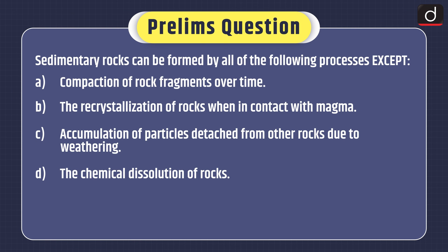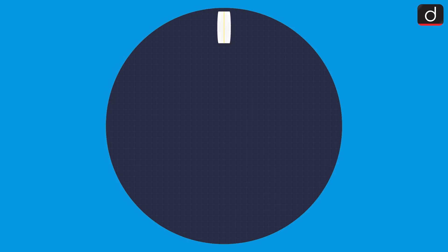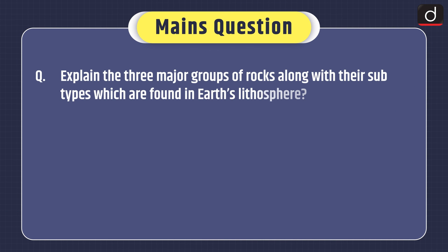Now it's time for practice questions. Prelims-based question: Sedimentary rocks can be formed by all of the following processes except — compaction of rock fragments over time, recrystallization of rocks when in contact with magma, accumulation of particles detached from other rocks due to weathering, or chemical dissolution of rocks. Mains question: Explain the three major groups of rocks along with their subtypes found in Earth's lithosphere. That's all for today. Stay tuned for the next episode. Thanks for watching.